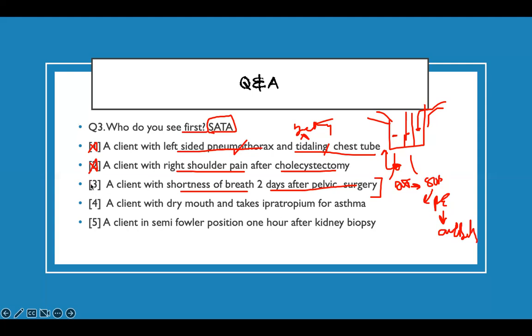A client with dry mouth and takes ipratropium for asthma. Okay, dry mouth, ipratropium. Connect the words together. Is my patient on ipratropium? What is that? It's anticholinergic. What does anticholinergic do? Decrease secretion everywhere. So your bowels will go down, so constipation, urine retention.